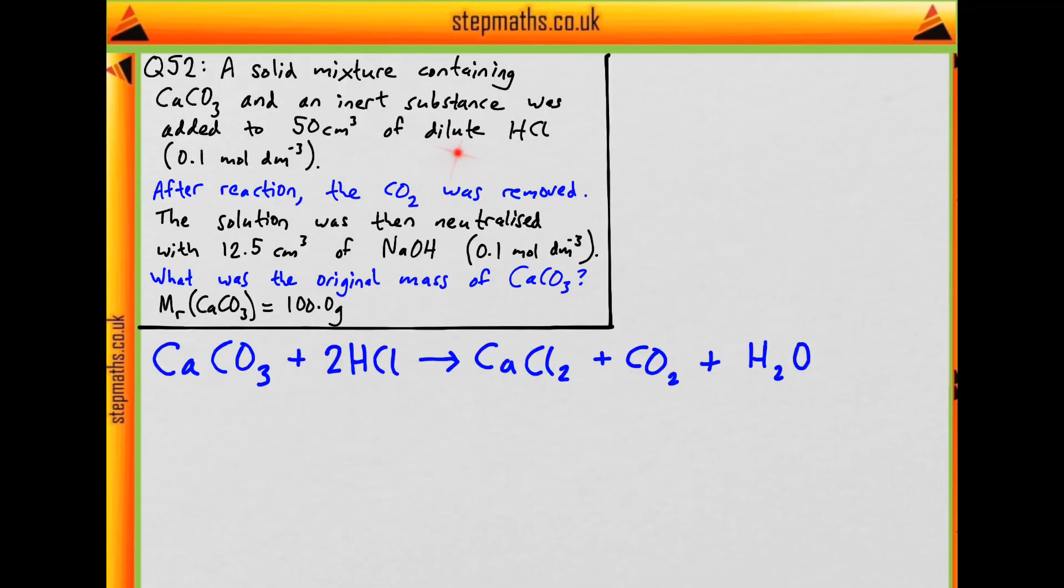You're also given the equation for this reaction: calcium carbonate plus hydrochloric acid forms calcium chloride, carbon dioxide and water. So where should we go first? Why don't we interpret this information about the HCl at the start? We know the concentration is 0.1 molar and the volume is 50 cm³.